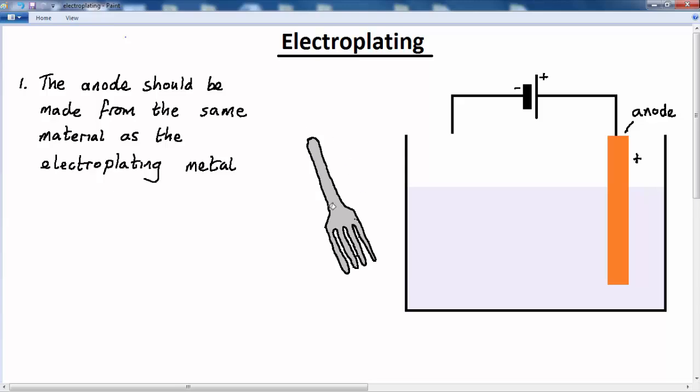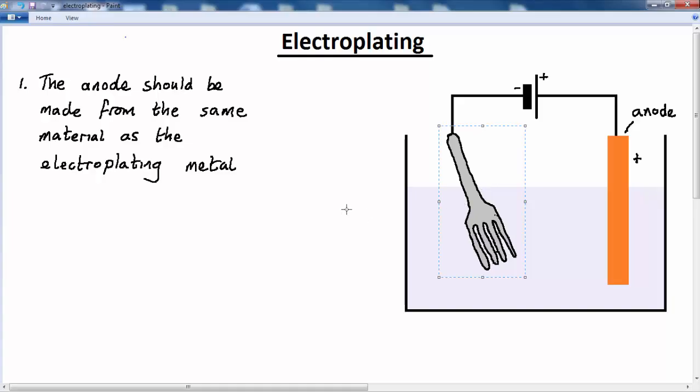Now the object that I'm going to electroplate must become the cathode. So I'm going to attach the fork to the negative terminal of the battery. The fork is going to become the negative electrode, or the cathode.